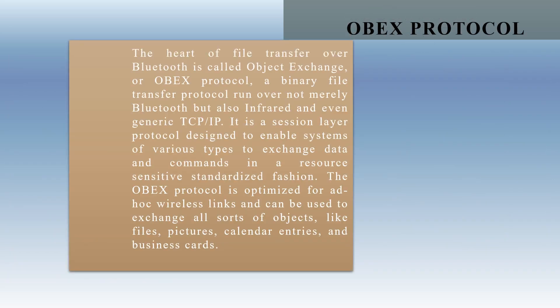Let us see the OBEX protocol and its functionality. The heart of file transfer over Bluetooth is called Object Exchange, or the OBEX protocol. It is a binary transfer protocol that not only runs over Bluetooth, but also over infrared and generic TCP/IP — where TCP stands for Transmission Control Protocol and IP stands for Internet Protocol. The OBEX protocol is optimized for ad hoc wireless links and can be used to exchange all sorts of objects like files, pictures, calendar entries, and business cards. It is a session layer protocol designed to enable systems of various types to exchange data and commands in a standardized fashion, providing push and pull functionality so that applications using OBEX do not need to manage the physical connection.